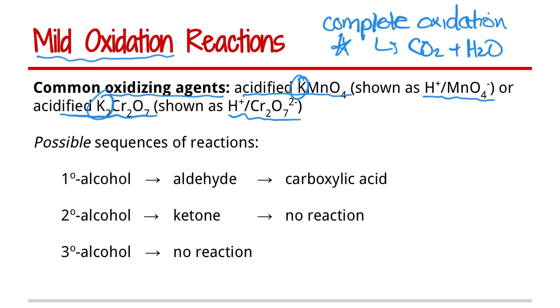In this particular sequence of reactions, we can create different functional groups. If we have a primary alcohol, we can do a controlled oxidation to produce an aldehyde, and then if we take that oxidation further, we can create a carboxylic acid. We'll talk about how to get one or the other product a little bit later in this video.